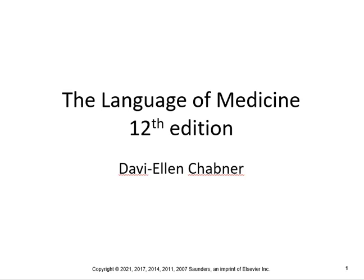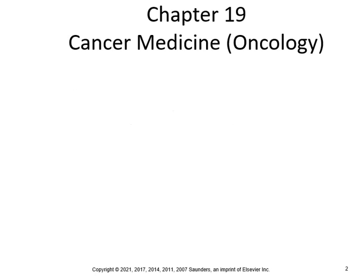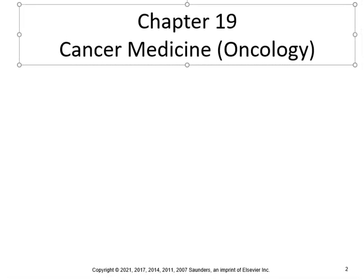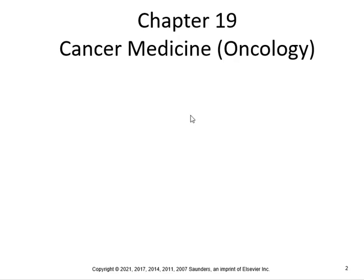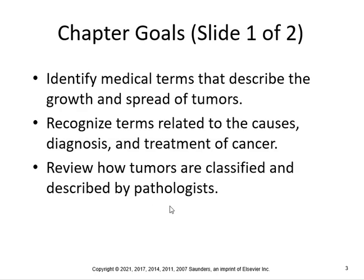Hello everyone, we're on Chapter 19 — oncology, cancer medicine. This is something that will be around for a long time as cancer research improves, but unfortunately we haven't figured out the exact mechanism to get rid of it just yet. There's some new research called immunotherapy which is really promising. I'll show you a link in the announcement section on how cancer works and some of the new therapies out there.